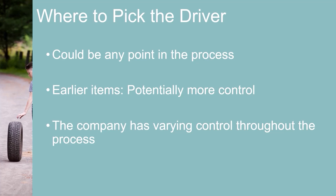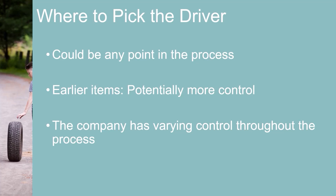The company has varying levels of control throughout the process. The problem with points earlier in the process is that each step is an assumption and calculation that ultimately arrives at revenue. Inaccuracies in the assumptions across the levels are compounded to reach revenue.